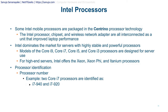Some Intel mobile processors are packaged using Centrino processor technology, where the Intel processor, chipset, and wireless network adapter are all interconnected as a single unit, improving laptop performance. Having all components on one die increases performance and improves battery efficiency — instead of draining the battery faster, it drains more slowly as a result of the more efficient integrated design.